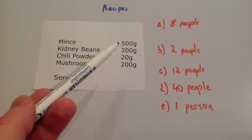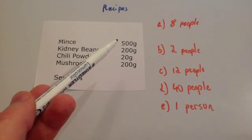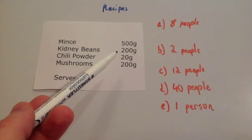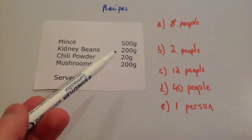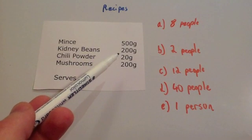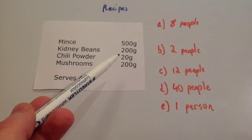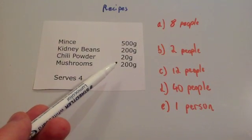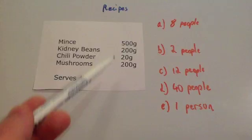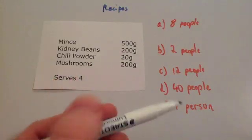So halve it and halve it again would be 125 grams of mince. Halve it and halve it again would be 50 grams of kidney beans. Halve it and halve it again would be 5 grams of chili powder. Halve it and halve it again would be 50 grams of mushrooms. So that's really useful.